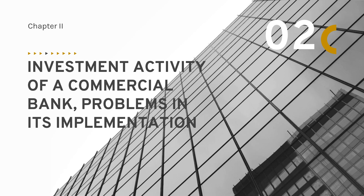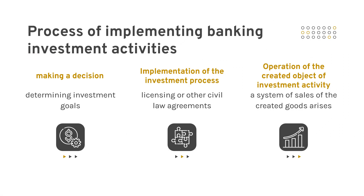Chapter two covers the investment activity of commercial banks and problems in its implementation. In a modern economy, increasing competition between commercial banks in the provision of services is a central issue. Effective use of financial assets and strengthening financial stability and liquidity are key. It is customary to distinguish three main stages of implementing banking investment activities: making a decision on investing, determining investment goals, and implementation of the investment processes.